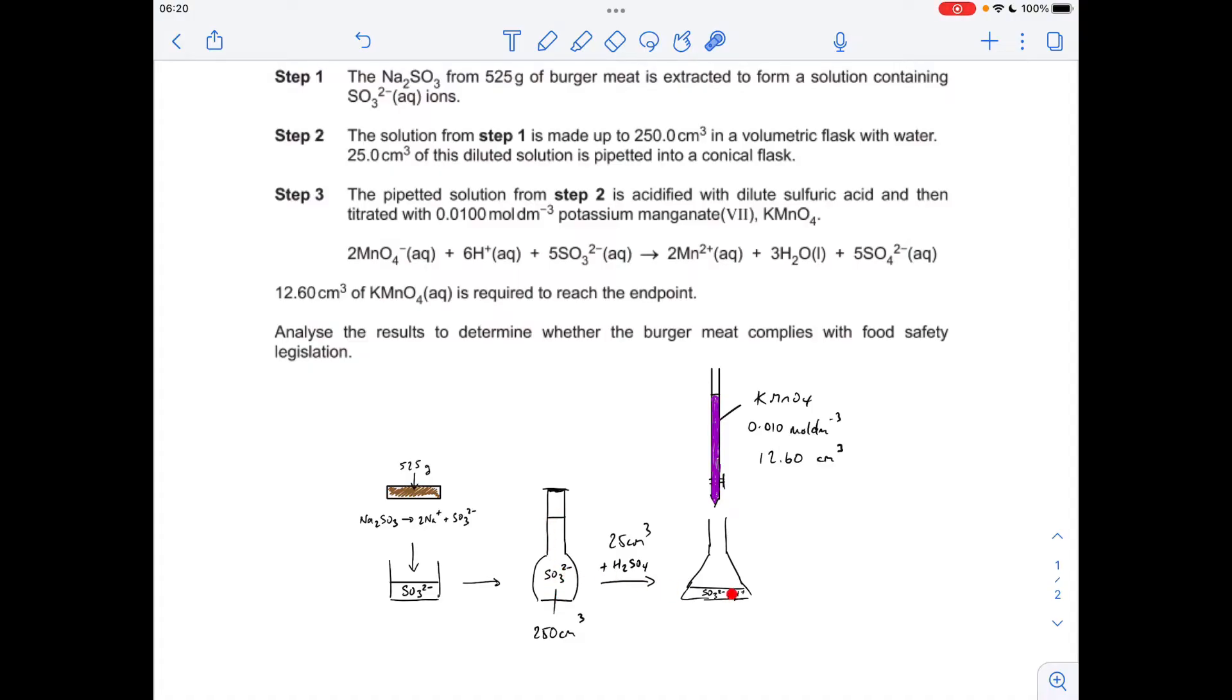They take 25 out and add some sulphuric acid to give the H plus ions needed for the redox reaction. And then they titrate that with potassium manganate 7, that concentration, and that was their titre.